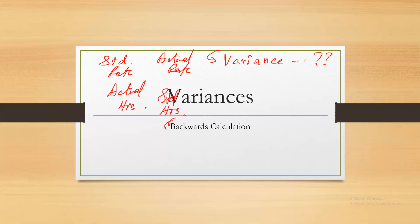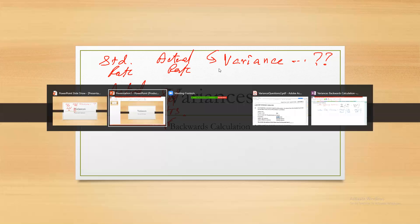These are sometimes called backward calculations of variances, where we are given the variances and we are required to calculate one of these: the standard rate, the actual rate, the actual hours, or the standard hours. Let me explain it with the help of an example.